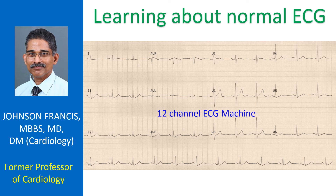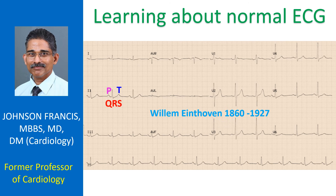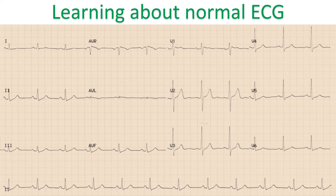This particular tracing was recorded using a 12-channel ECG machine. In a normal ECG, P wave, QRS complex, and T wave are usually all positive in leads 1, 2, and 3, as Einthoven designed the lead system so that all standard leads would record positive waves in a normal individual. Though QRS is positive normally in these leads, P wave and T wave polarity can show some variation in normal individuals as well.